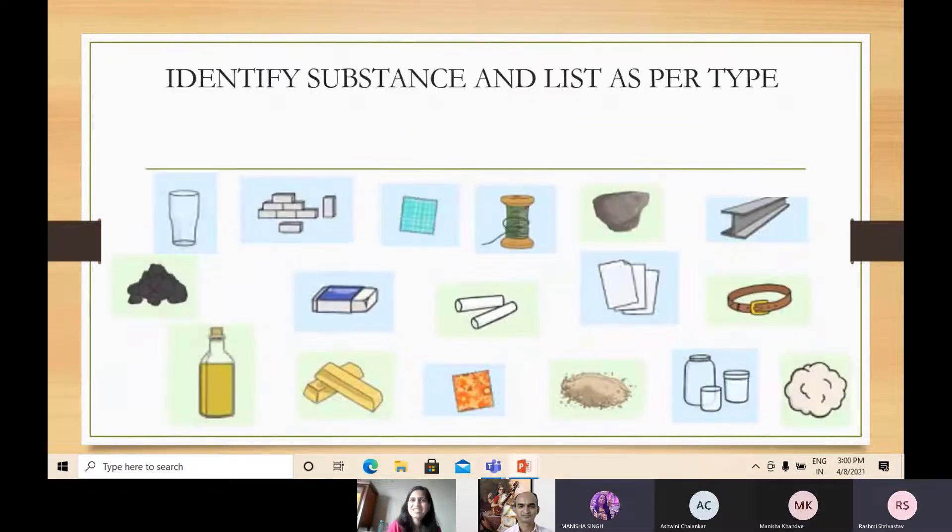So now I have here - okay, I'll give you just one minute. Please divide all these substances as natural and man-made, and within one minute I'll change the slide, so your time starts now. Matchbox is man-made. Don't tell me, you just do it. I'll show you the answer. Do it in your copy, quick quick quick. Identify the substances and list them as per the type - natural or man-made.